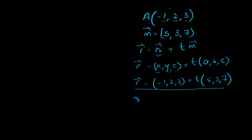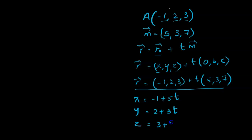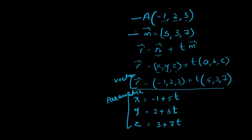To write down the parametric equation we just have to separate x, y and z coordinates. So x is negative 1 plus 5t, y is 2 plus 3t, and z is 3 plus 7t. And this is how we get the vector and parametric equation when we're given a point and the direction vector.